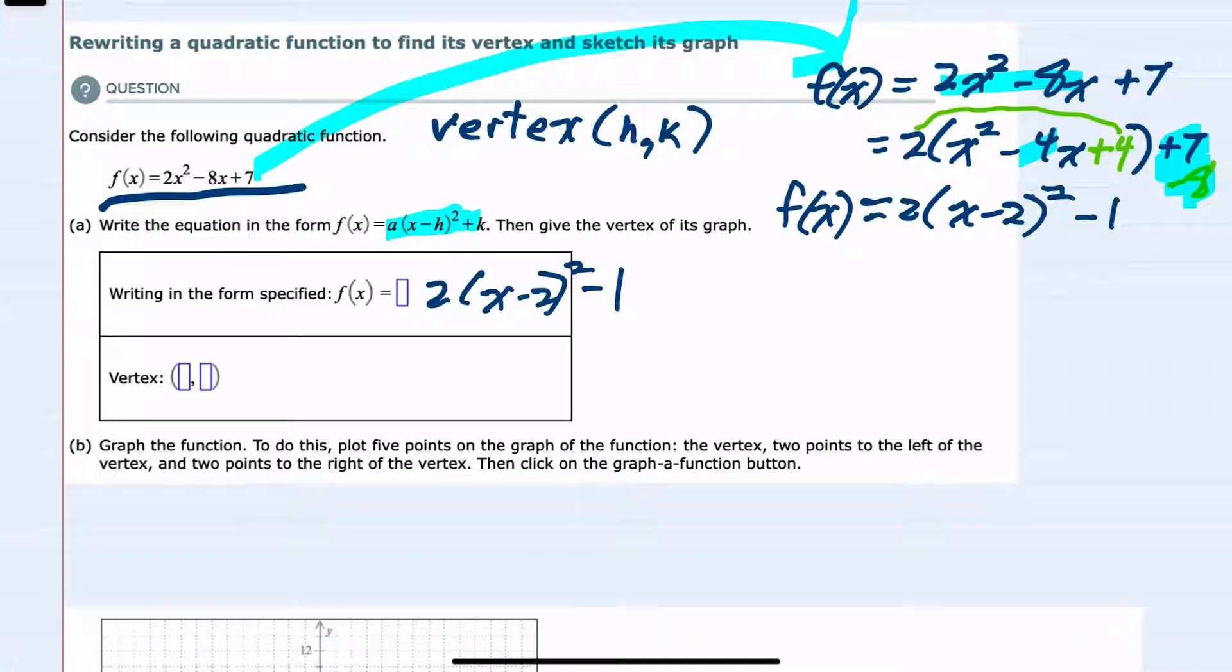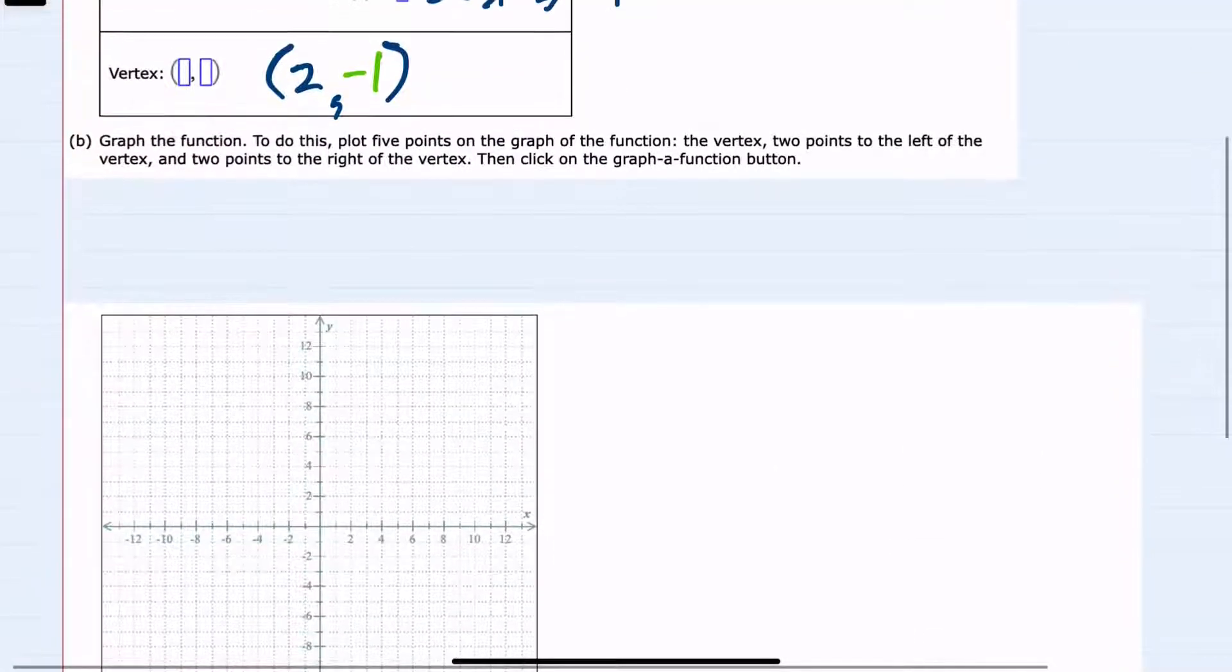For the second part, we're also supposed to indicate the vertex. We know that the standard form here has (x - h). So in this example, since the format is -h, our h is just going to be 2. And our k, the constant being added on the outside, is -1. So our vertex is (2, -1). At this point, we have the equation and the vertex, so we can move on to part b.